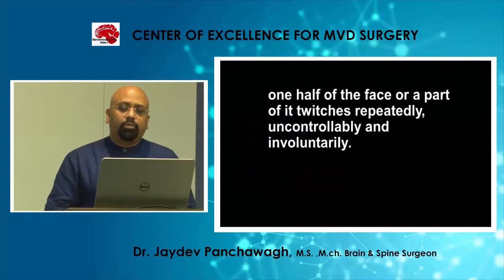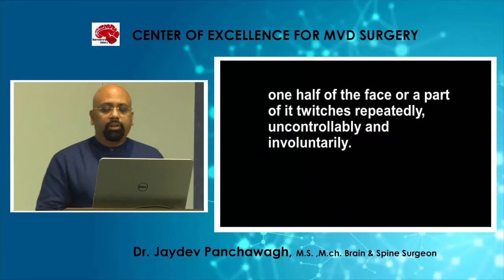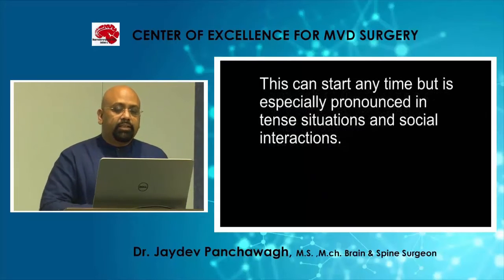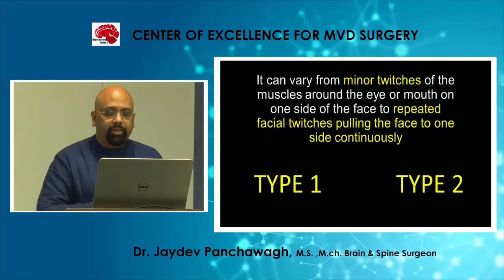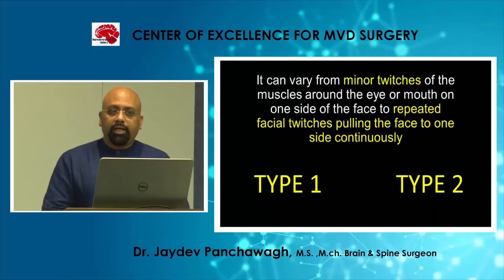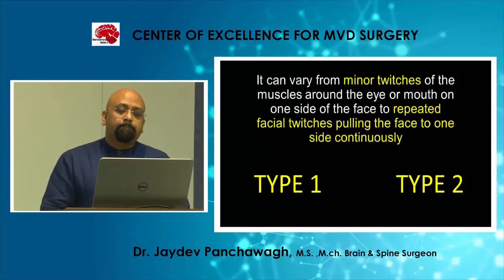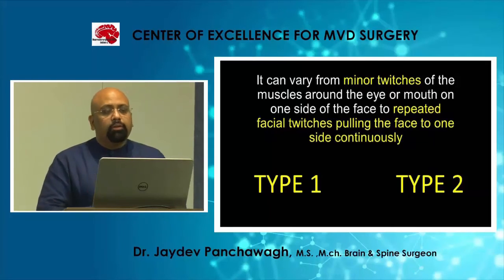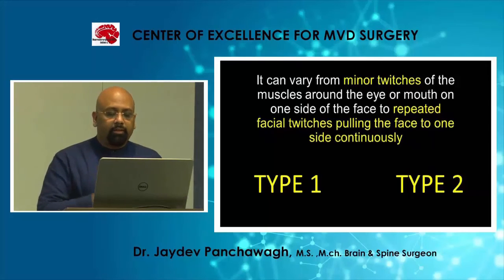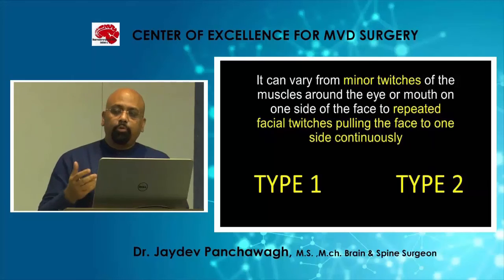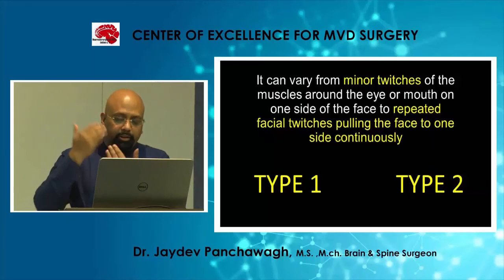One half of the face, or a part of it, twitches repeatedly, uncontrollably and involuntarily. This can start anytime, but it is especially pronounced in tense situations and social interactions. It can vary from minor twitches of muscles around the eye or mouth, but always on one side of the face, and can progress to involve the entire face. Type 1 Hemifacial Spasm starts from the eye and progresses downward; Type 2 starts near the mouth and progresses upward.